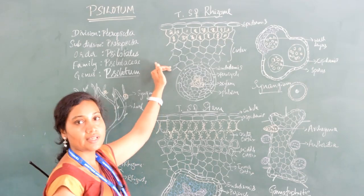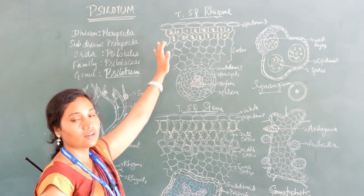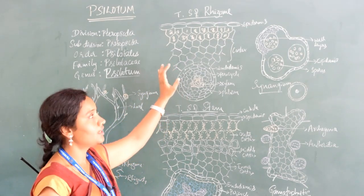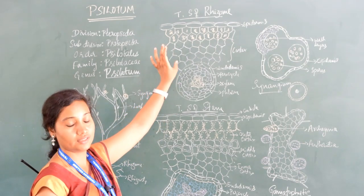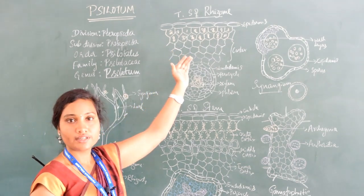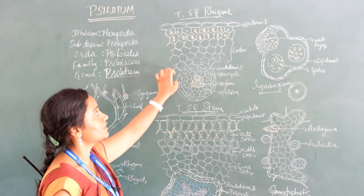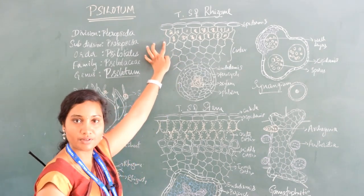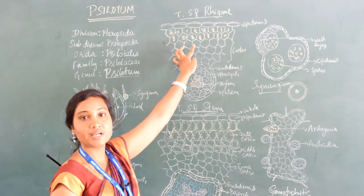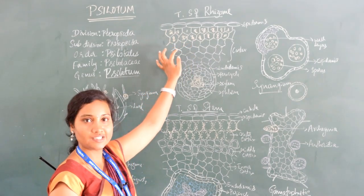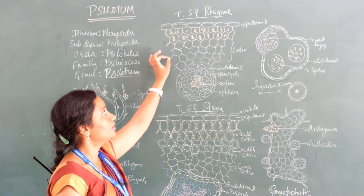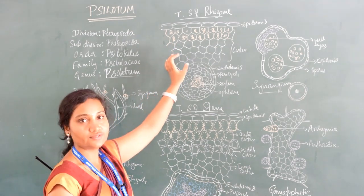Below the epidermis is the cortical region, which is made up of parenchymatous cells and differentiated into three parts: outer cortex, middle cortex, and inner cortex. The outer cortex is made up of parenchymatous cells and is associated with mycorrhizal fungi, which helps in nitrogen fixation.